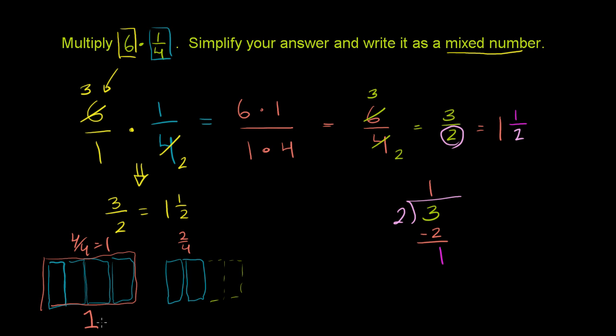2 out of 4 is the same as 1/2. So this is 1 and 1/2, which is exactly what we got before.